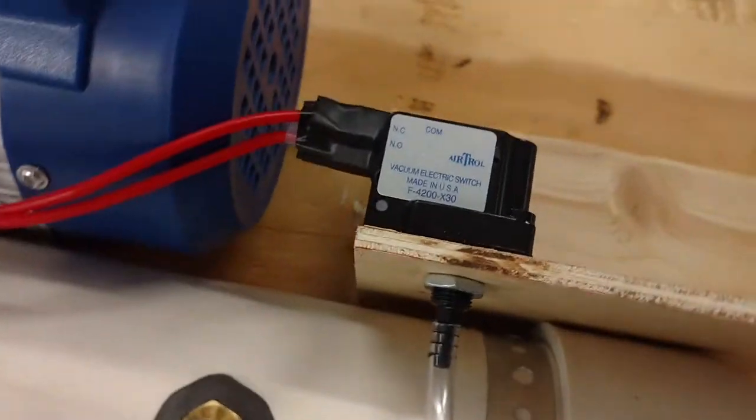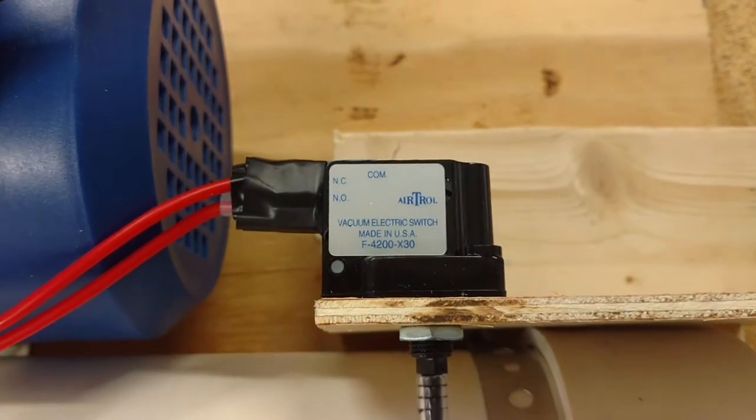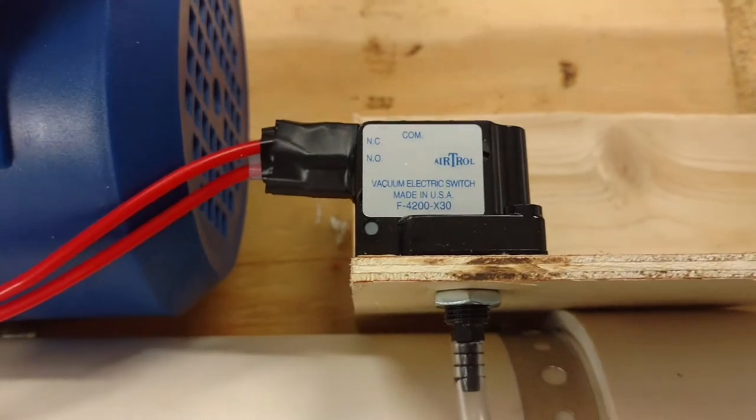I wired in an air troll vacuum switch. This lets you adjust the pressure of the vacuum and have it adjustable to whatever you want from I think 4 to 30 inches.